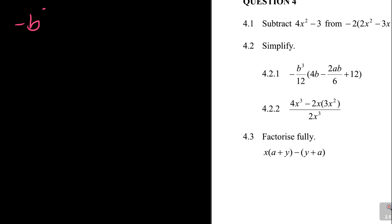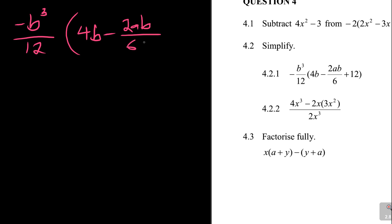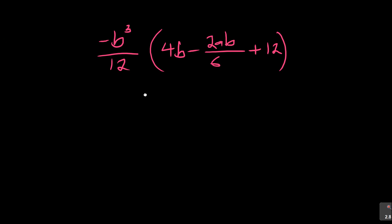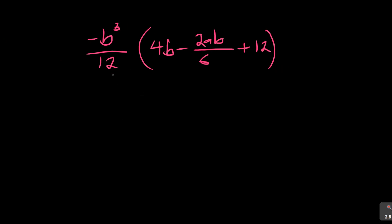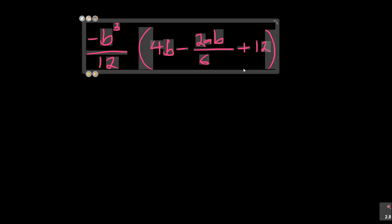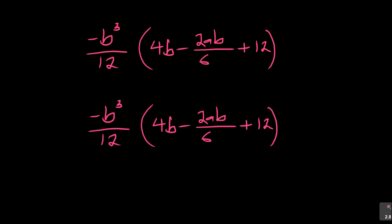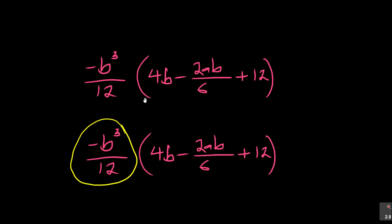Simplify: minus b cubed over 12, times (4b minus 2ab over 6 plus 12). Don't panic over fractions. The method is the same - this whole thing is one thing that comes in and multiplies. Let me duplicate this so you can see what I'm doing. Think of it like a times (a + b + c).